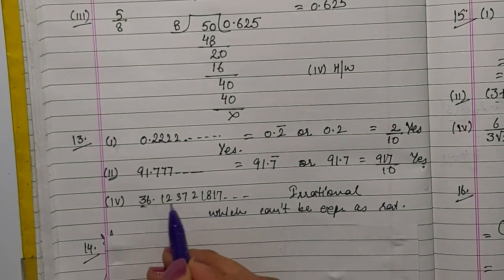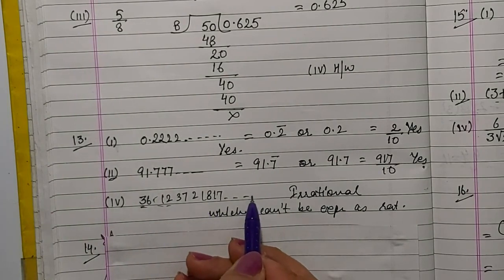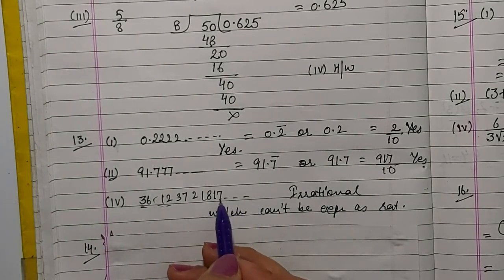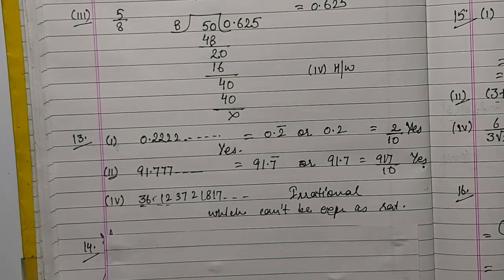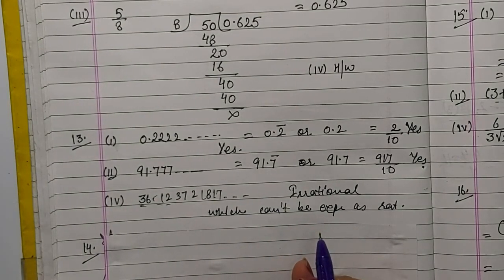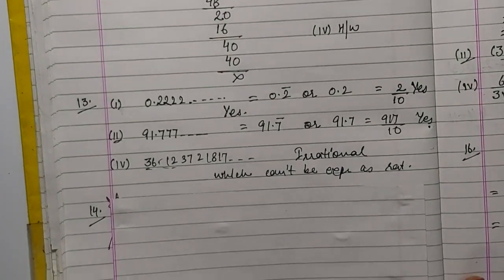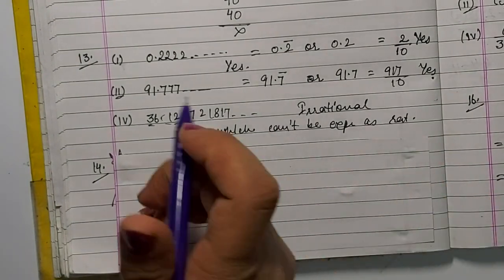Fourth part: we are having a number with an endless series of digits which are non-recurring and non-terminating. According to the definition of irrational numbers, a number which is non-recurring and non-terminating cannot be put in the form p by q where denominator is not equal to 0. Hence this is an irrational number — it cannot be expressed in the form p by q.